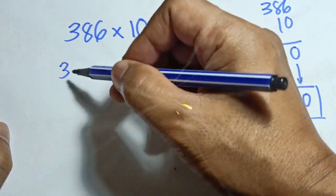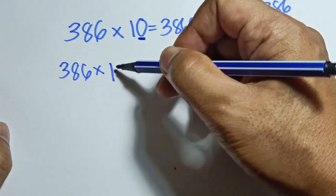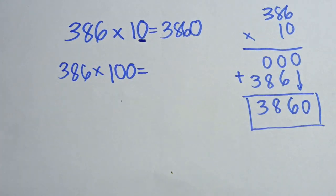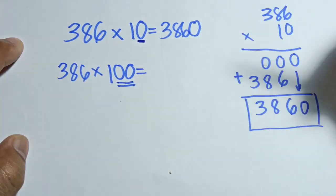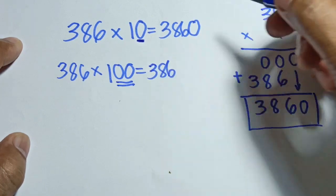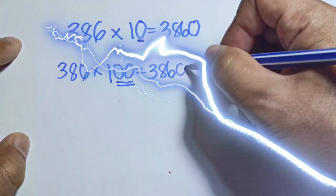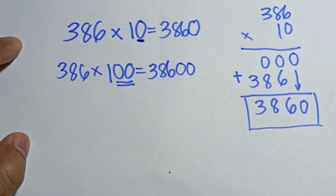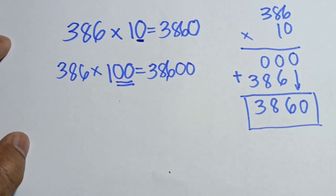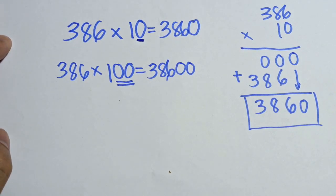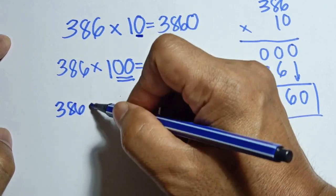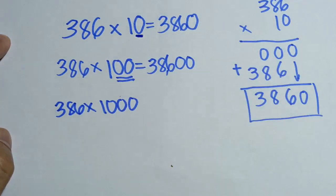For example, if we multiply 386 times 100 — in 100 there are two zeros. So copy the given number, which is 386, and then add two zeros beside the last digit. When you multiply 386 times 100, the answer becomes 38,600.